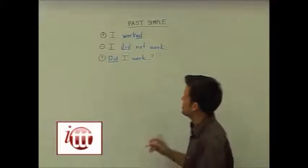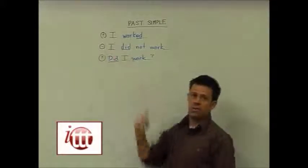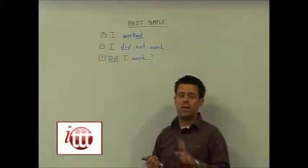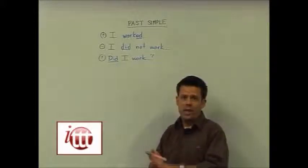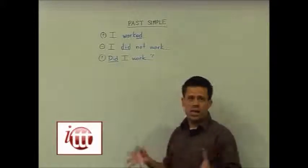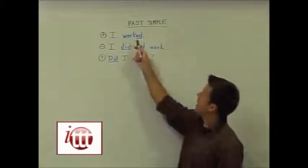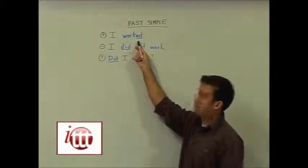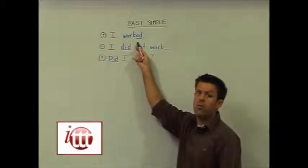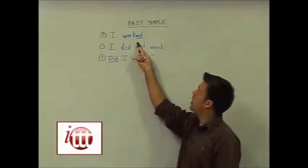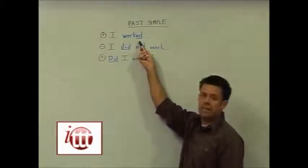To make positive sentences, we have our subject — which could be anything from I, you, we, they, it, he, she — and now we conjugate, we change our verb, most often by adding -ed.